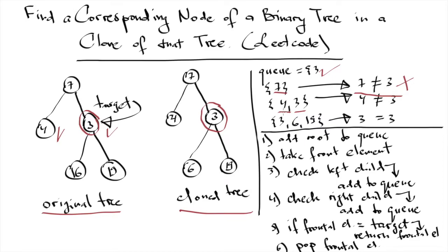We look at the children of four — as you can see, four has no children, which means we don't add anything to the queue. Then we pop out four and compare it with the target value. Again, they are not equal to each other, so we have to continue.